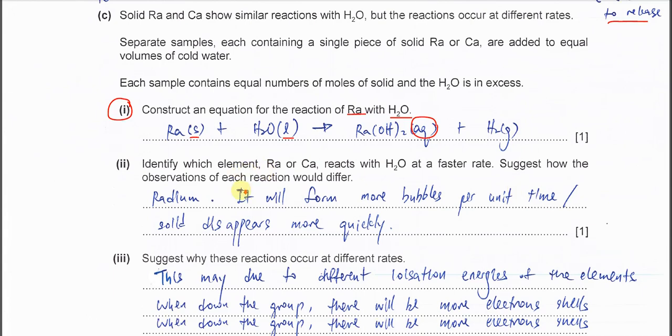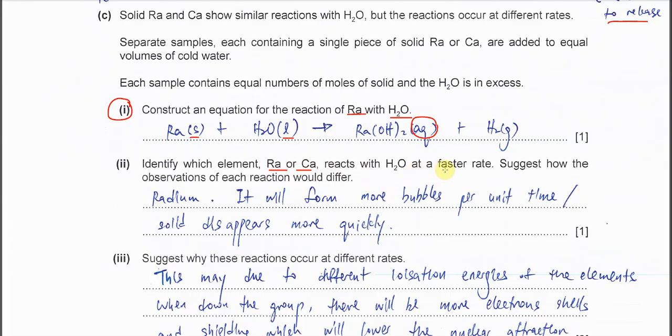Part 2. Identify which element, radium or calcium, reacts with water at faster rate. Suggest how the observation of each reaction would differ. Just now I already told you the reactivity increases down the group. Means radium is going to react with water easier and faster. So the answer must be radium. If radium is more reactive, it will form the gas faster. So it will form more bubbles per unit time, so we can see it's more vigorous. Or you can mention the solid disappears faster.